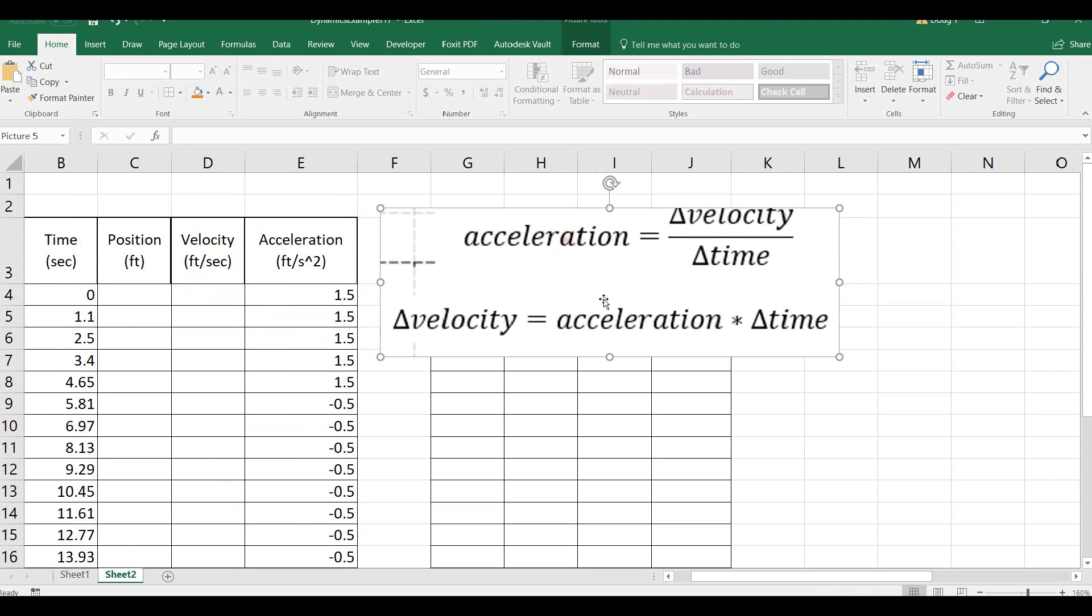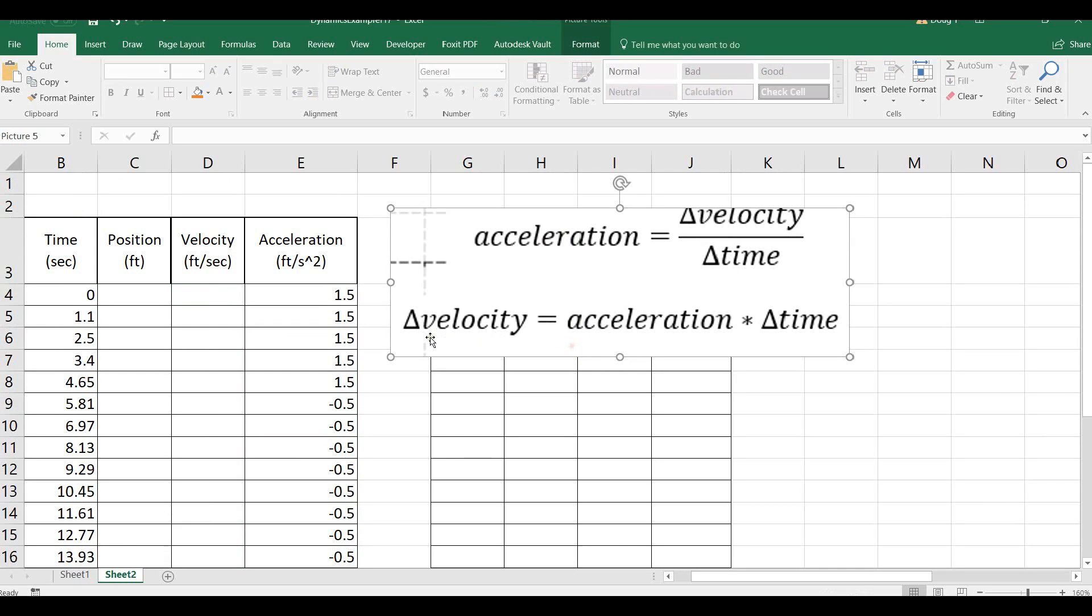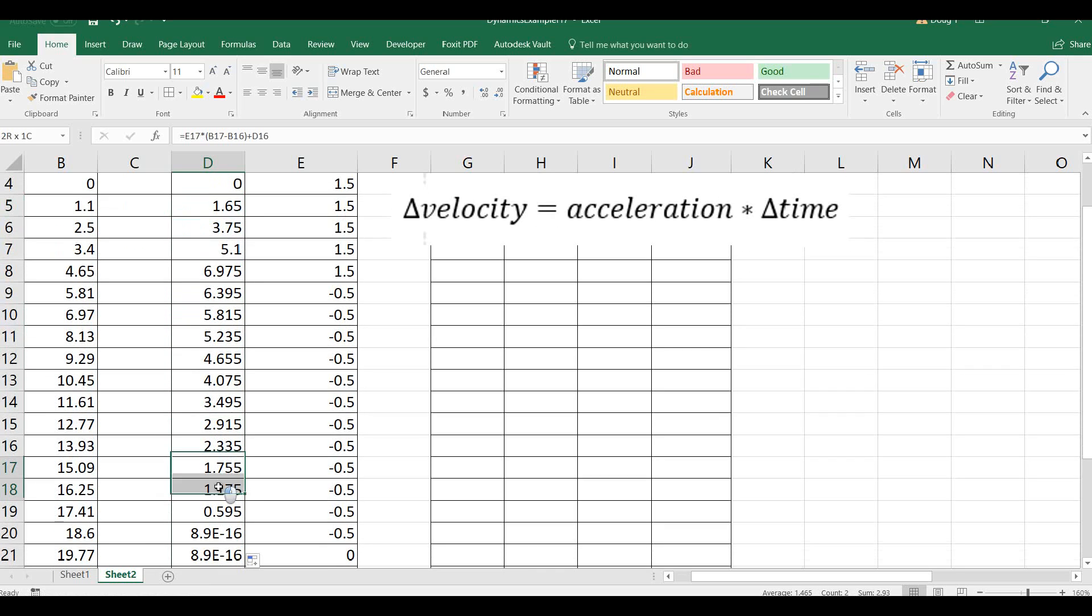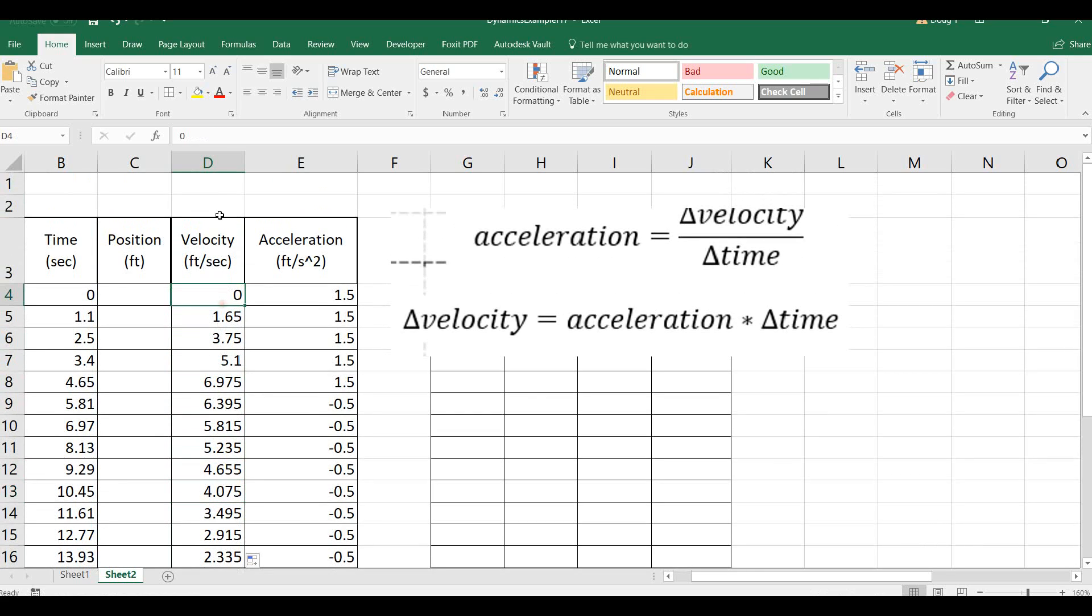Acceleration is change in velocity over change in time, which means velocity is going to be acceleration times time. Now this is the change in velocity, so if we have some initial velocity, the second velocity is going to be equal to acceleration times what kind of time has changed. From this, we're going to need to add on what our previous velocity was. If our acceleration is positive, this is going to be getting larger and larger, and if our acceleration is negative, then it'll go smaller and smaller. So there's our velocity.